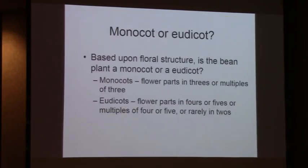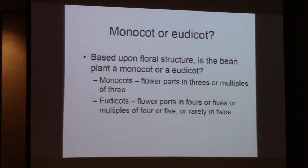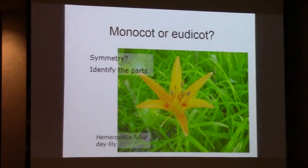So based upon the floral structure, is the bean plant a monocot or a eudicot? We had five fused sepals, five petals, ten stamens - five plus five gives you ten - and one pistil. So it's essentially a eudicot. Let's take a test - monocot or eudicot? Monocot. Eudicot.